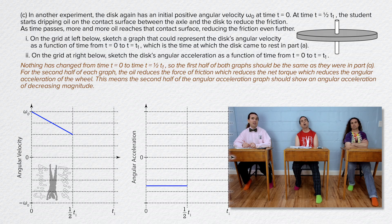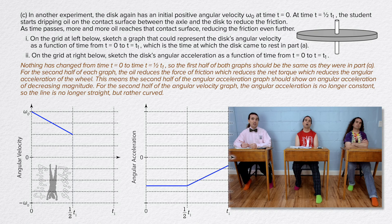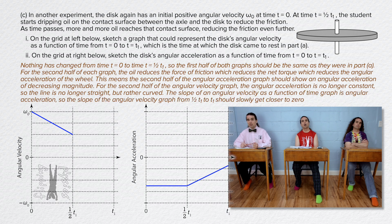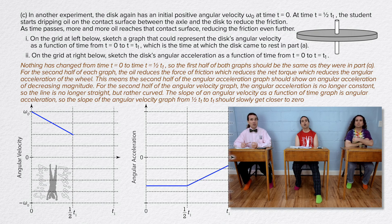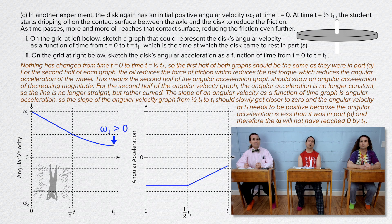The second half of the angular acceleration graph should show an angular acceleration with a magnitude which is decreasing — the line should move towards the horizontal time axis. For the second half of the angular velocity graph, the angular acceleration is no longer constant, so the line is no longer straight but rather is curved. The slope of the angular velocity graph from one half t1 to t1 should slowly get closer to zero or get flatter. And the angular velocity at t1 needs to be positive, because the angular acceleration is less than it was in part A, and therefore the angular velocity will not have reached zero by t1.